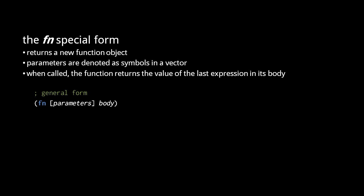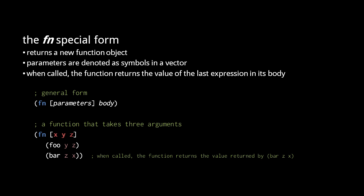If a symbol in a function body has the same name as one of the parameters, then it resolves to that parameter. So, this example fn form returns a function object, which, when invoked, takes three arguments. The parameters x, y, and z are locally bound to the function, and so occurrences of those symbols in the function body resolve to the parameters. The body here calls two functions, foo with the arguments y and z, then bar with the arguments z and x.